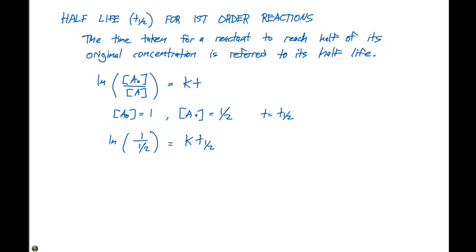If we look at this, one divided by one half is gonna be two. So the ln of two is gonna equal K times T one half. And if we did the math for this, 0.693 is gonna equal K times T one half, because the ln of two is gonna be 0.693.